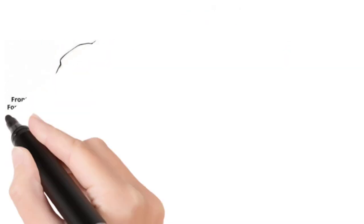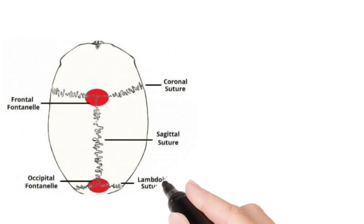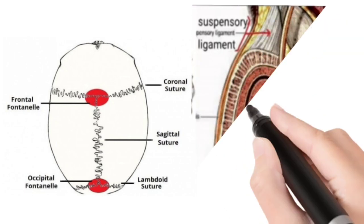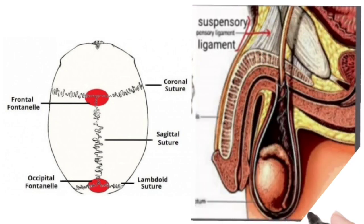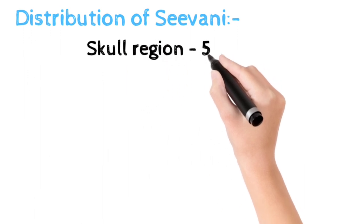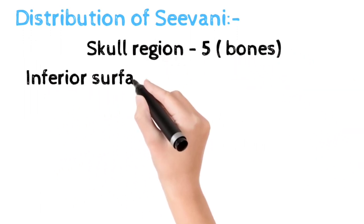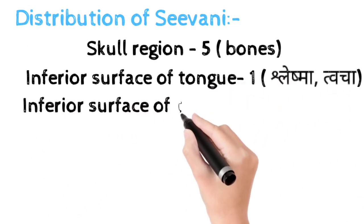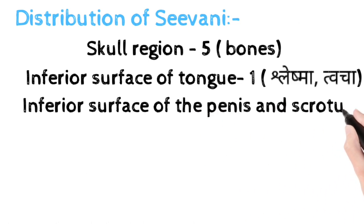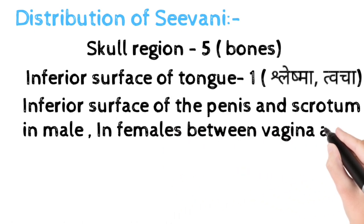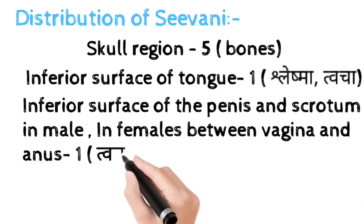Taaki aap logon ko achhe se samajh mein aaye, main yaha pe saath-saath mein pictures attach kar rahi hoon. Yah sutures ki picture hai jo ki maine bataya ki skull region mein 5 suture honge aur ek hoga penis region mein jo ki hoga suspensory ligament. Distribution of Seevani, skull region mein kitne honge 5 jo ki bone se bana hua hoga. Inferior surface of tongue mein hoga ek jo ki Sleshma aur twacha se bana hua hoga. Inferior surface of penis and scrotum in males, in female it is between vagina and anus. Yahan pe ek Seevani hogi jo ki twacha ki bani hui hogi.